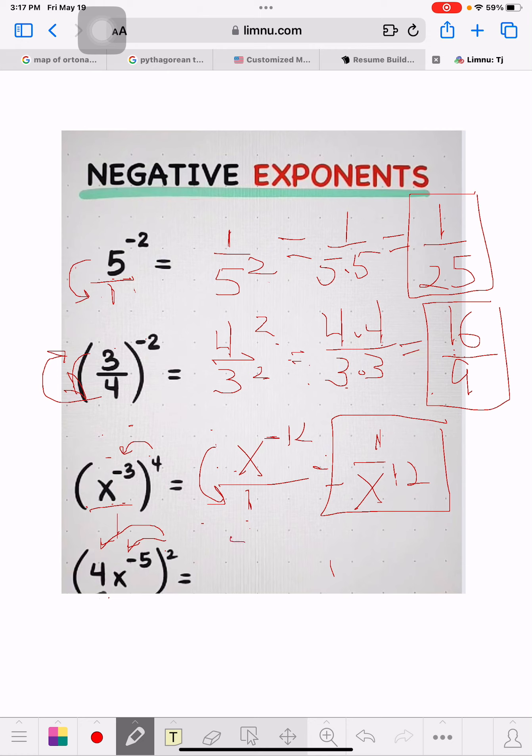So this could be rewritten, 4 to the second power, then these are times, so let's put a little dot there. It would be x to the negative 5th power times 2, which would be to the negative 10th power. Now, this can be all written over 1. So what I do here, I just flip this. I bring the x down here, the 4 could stay at the top.